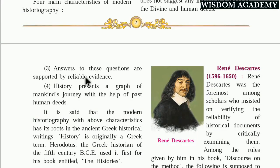Third, answers to these questions must be supported by relevant evidence. Whatever historical document I want to prove, I must ask questions and provide evidence or proof for my answers. History represents a graph of mankind's journey with the help of past human deeds. To describe this graph, we must provide proof and evidence, showing the chain of events — what happened after what.